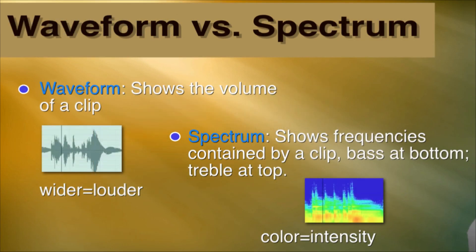The last thing I want to mention in our first part of Soundtrack Pro from start to finish is waveform versus spectrum. The waveform shows the volume of a clip — the wider the waveform, the louder the volume at that point. A big wide spot means a loud spot; if it's real skinny, it's a soft spot. A spectrum editor shows the frequencies contained by a clip: bass at the bottom, treble at the top, and color equals intensity. Blue means nothing is there; as it goes down it gets green, more intense, all the way down to red. The spectrum editor allows much more flexibility and power, and Final Cut Pro does not have one — Soundtrack Pro does.